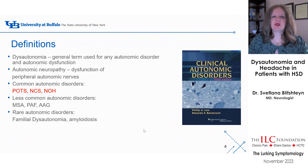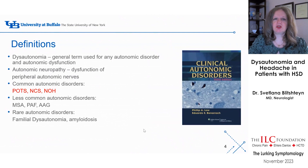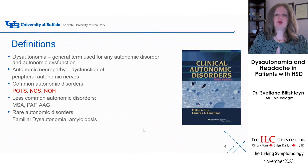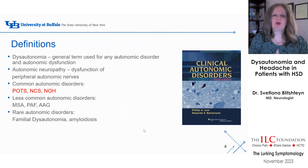Common autonomic disorders we'll discuss today are POTS — postural orthostatic tachycardia syndrome — neurocardiogenic syncope or NCS, and neurogenic orthostatic hypotension or NOH. Less common disorders include multiple system atrophy, pure autonomic failure, and autoimmune autonomic ganglionopathy. Rare autonomic disorders include familial dysautonomia and amyloidosis — we won't be discussing those today.